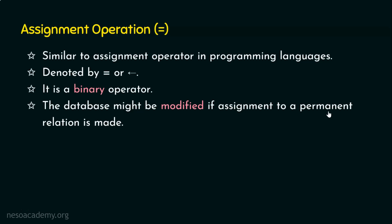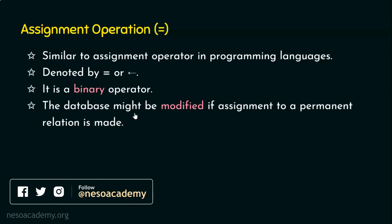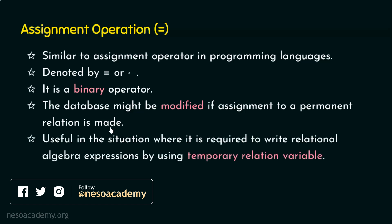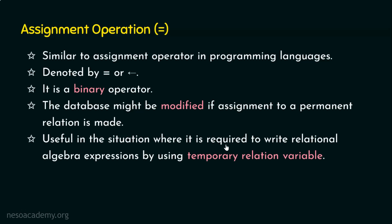A permanent relation is the relation that actually exists in the database, and we don't want modifications carried out directly on it. Temporary relations, on the other hand, are generally the output of relational algebra expressions. If we want to assign that output to a table name or variable, we can use the assignment operator. The output of relational algebra expressions are tables or relations, and those output relations will not have a name.